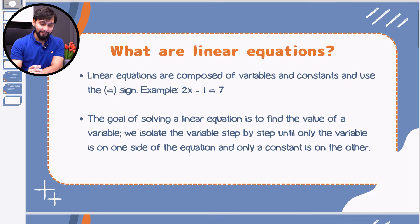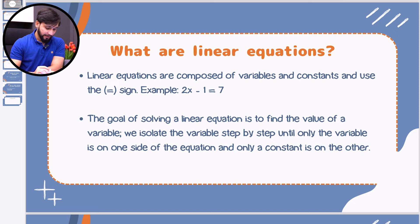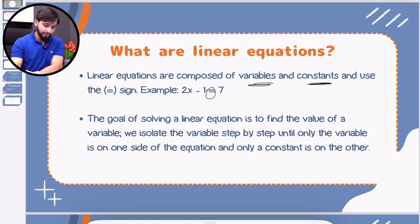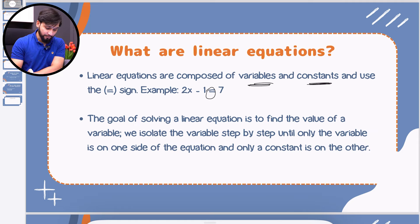If we talk about linear equations, the definition is very simple: it's an equation composed of variables and constants. The elements use the equals sign — this sign represents our equation. So 2x minus 1 equals 7 is what we have as a linear equation.